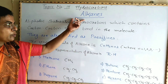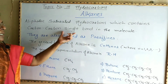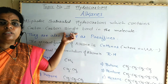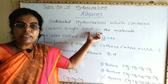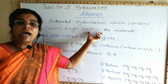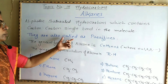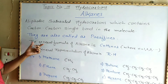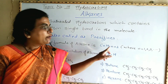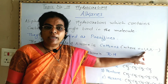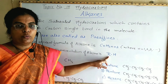Aliphatic saturated hydrocarbons which contain carbon-carbon single bond along with carbon-hydrogen single covalent bond in the molecule are called alkanes. Alkanes are also known as paraffins. The general formula of alkanes is CₙH₂ₙ₊₂, where N is the number of carbon atoms and N equals 1, 2, 3, 4, etc. The general representation of alkanes is RH, where R is an alkyl group.